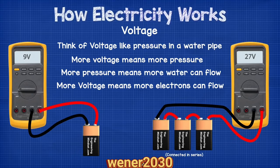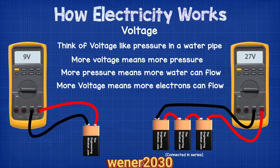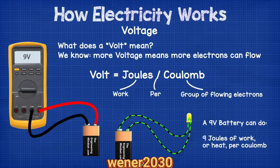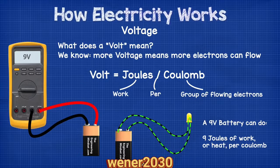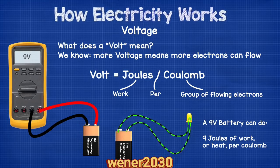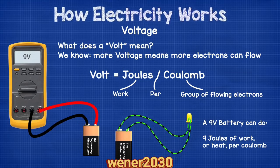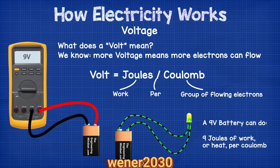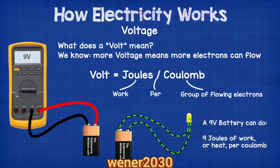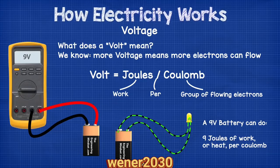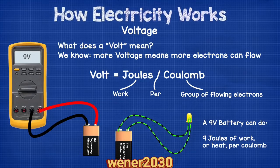Voltage is a pushing force of electrons within a circuit. It's like pressure in a water pipe — the more pressure you have the more water can flow; the more voltage you have the more electrons can flow. A volt is a joule per coulomb. A joule is a measurement of energy or work, and a coulomb is a group of flowing electrons. So a nine-volt battery can provide nine joules of energy in the form of work or heat per group of electrons that flow from one side of the battery to the other.